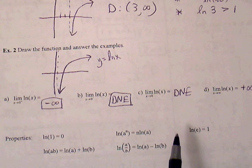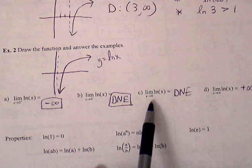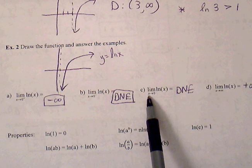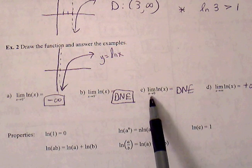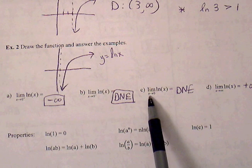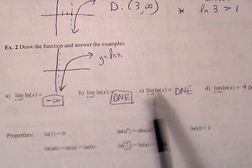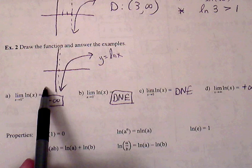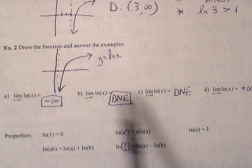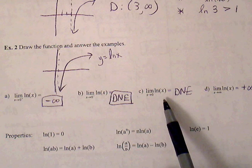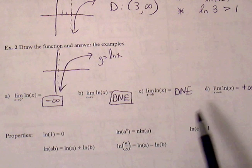Limit as x approaches 0. In order for a limit to exist as x approaches a value, it has to approach the same y value from both sides of the graph. So we see there's nothing on the left side, even though the right side does approach negative infinity, but we have to say the limit does not exist.